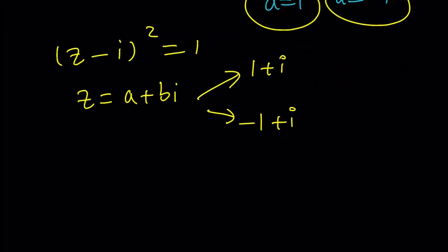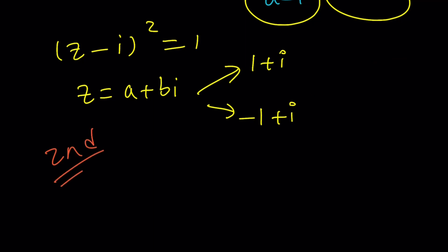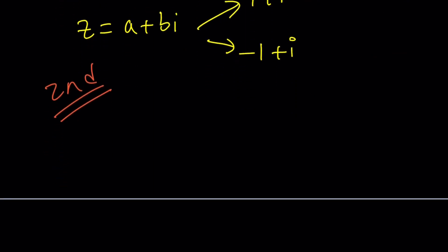Let's go ahead and take a look at the second method. So the second method is basically going to treat z as a variable. And now we're going to be solving a quadratic equation. Let's go ahead and expand it.